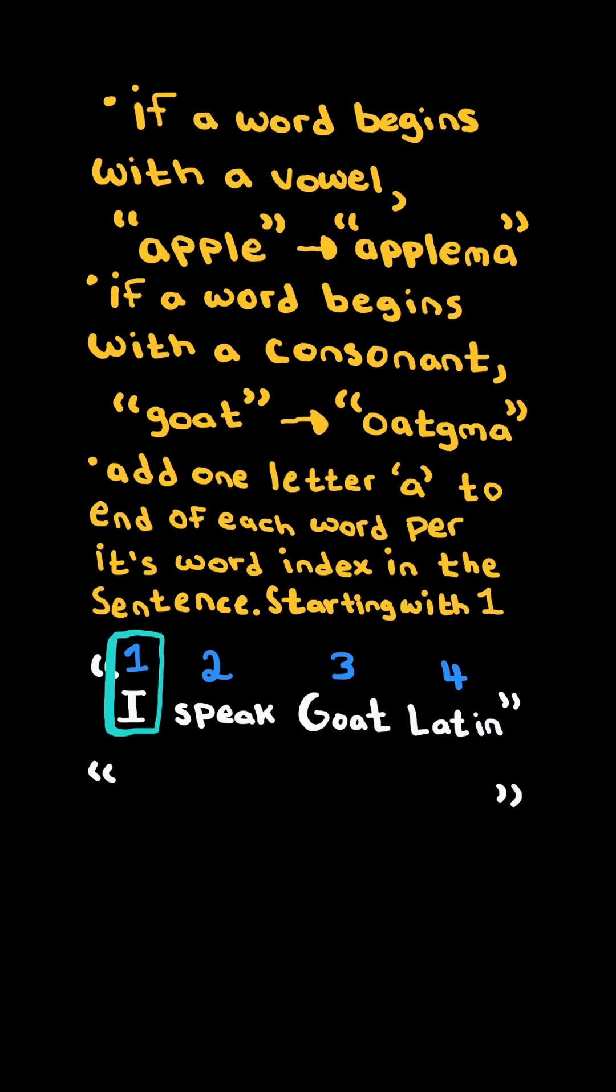Let's convert the word I to Goat Latin. It begins with a vowel, so we append the string M-A, and we add one A since it begins at index one in the sentence.